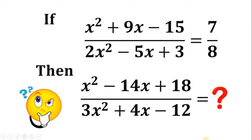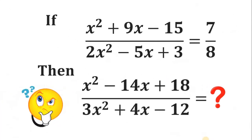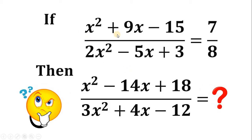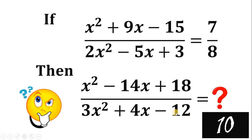Can you solve this challenge? Here's the question: if x squared plus 9x minus 15, all over 2x squared minus 5x plus 3, equals 7 over 8, then what is the numerical value of x squared minus 14x plus 18 all over 3x squared plus 4x minus 12? You can pause this video if you want to give this problem a try.